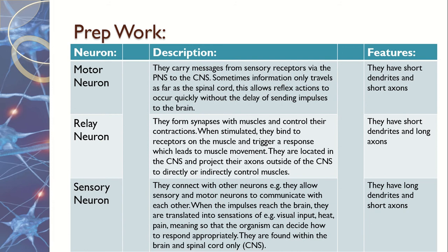There are three types of neurons you need to know, along with their features. First, we've got motor neurons — these are the ones that control our muscles, telling your arm to move and bend. These have short dendrites and long axons. The short dendrites are the little tentacles at the end of the neuron, and the long axons are the part in the middle that contains and passes the message along.